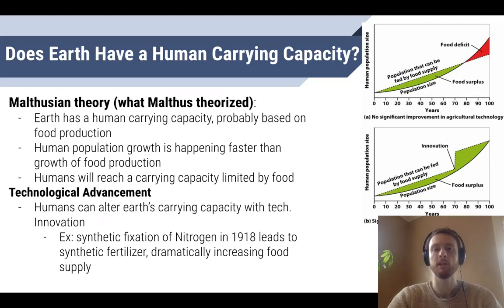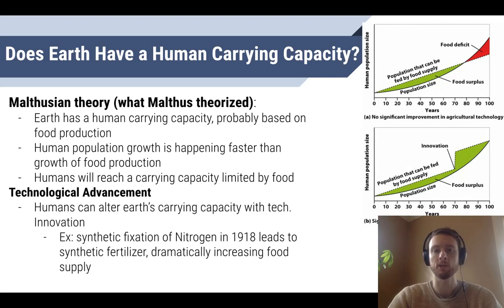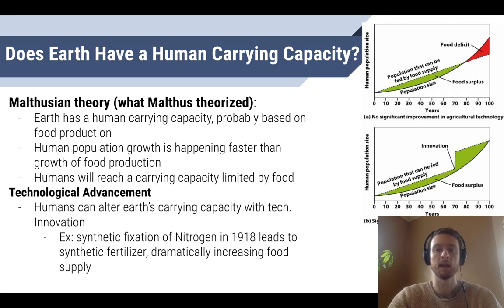Thomas Malthus theorized that because population was growing exponentially but food growth was linear, sooner or later we would run out of food to feed everyone, which would impose a carrying capacity on Earth's human population. One of the flaws of Malthus's theory is that it failed to account for the idea that technological advancements could increase our food supply. The best example of this was the discovery of the Haber-Bosch process for synthetically fixing nitrogen into ammonia in 1918.